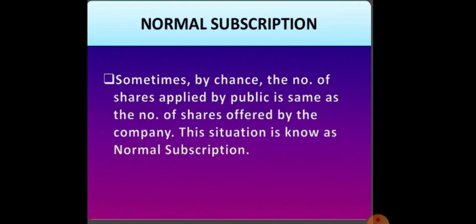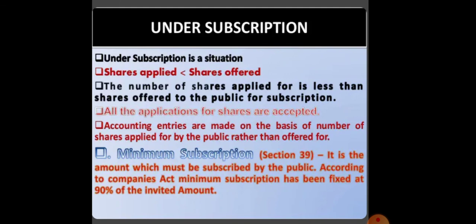What is normal subscription? If I offered 10,000 shares and the public also applied for exactly 10,000 shares, that is called normal subscription — the number of shares applied equals the number of shares offered. Under subscription is when the number of shares applied is less than shares offered. All applicants get their shares, and accounting entries are made on the basis of shares actually applied, not the total shares issued.